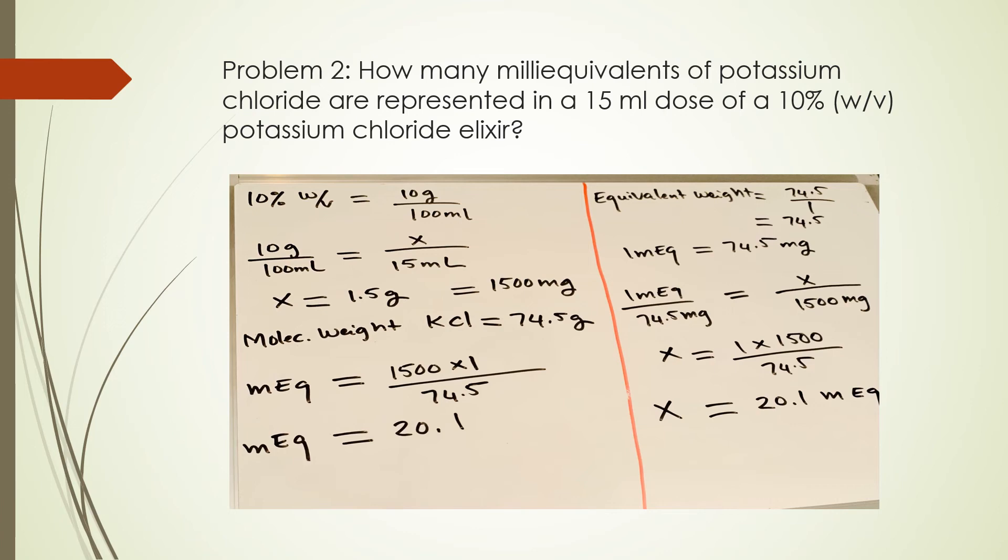Here we're being asked for milliequivalent. First, we have to find the weight. We're given 10% weight in volume. We know 10% weight in volume is 10 grams over 100 mL. Here we can use ratio and proportion. If 10 grams is 100 mL, then for 15 mL is x. X equals 10 times 15 divided by 100. So that's 1.5 grams. And when you convert that to mg, that's 1500 mg.